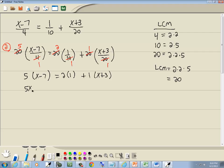5 times x is 5x, 5 times negative 7 is negative 35. 2 times 1 is 2. And this 1 doesn't do anything because 1 times x is x, and 1 times 3 is 3.